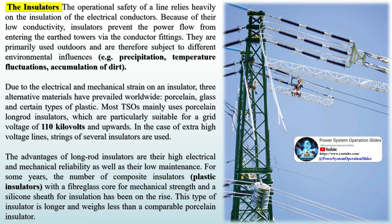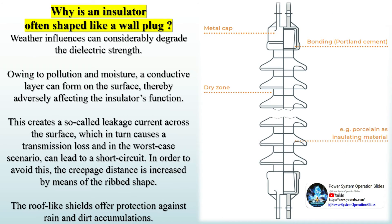In the case of extra-high voltage lines, strings of several insulators are used. Why is an insulator often shaped like a wall plug? Weather influences can considerably degrade the dielectric strength. Owing to pollution and moisture, a conductive layer can form on the surface, thereby adversely affecting the insulator's function. This creates a so-called leakage current across the surface, which in turn causes a transmission loss and, in the worst-case scenario, can lead to a short circuit. In order to avoid this, the creepage distance is increased by means of the rib shape.